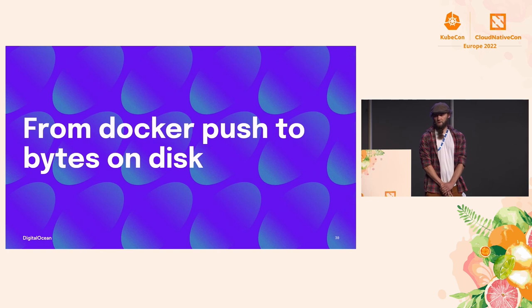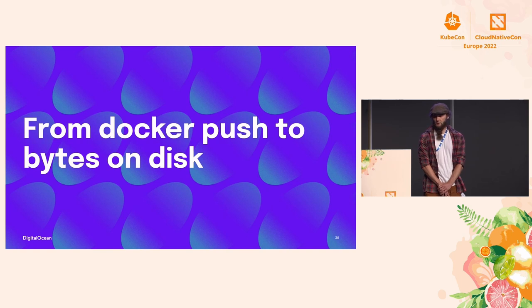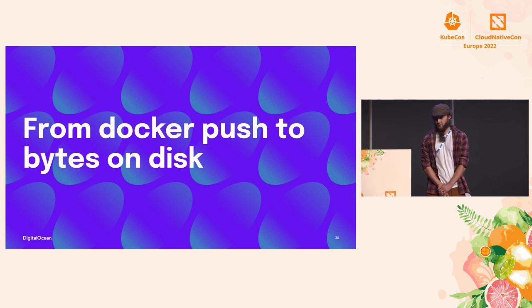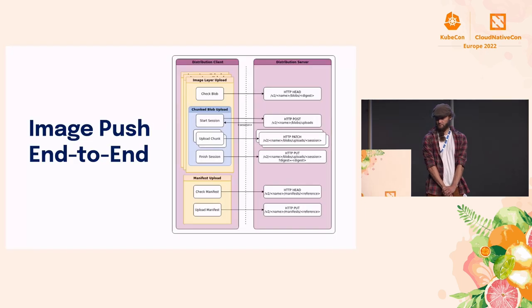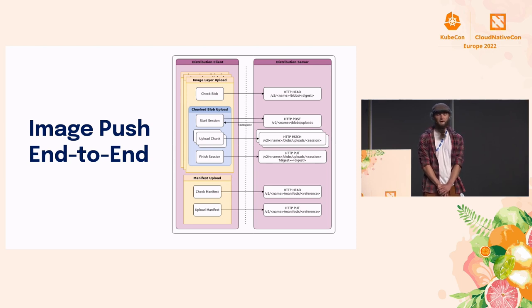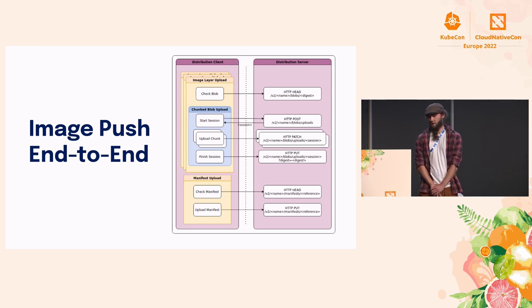Now that we've covered the broad strokes of HTTP interactions and the distribution internals, let's discuss how these elements fit together from Docker push to bytes on disk. We illustrated an ideal image push workflow where the client first pushes all image layers, then pushes the manifest. We'll zoom in to examine the interface methods involved in uploading an individual image layer — specifically the HTTP PATCH function for the blobs uploads endpoint.